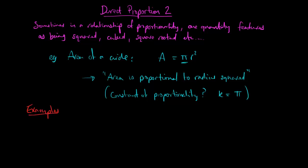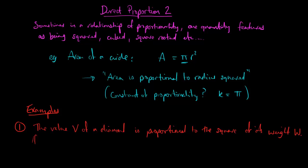So let's just consider some examples of how to do this. The value which we'll call v of a diamond is proportional to the square of its weight, not proportional to its weight w but to the square of its weight.